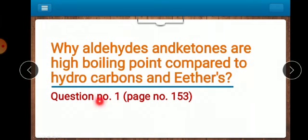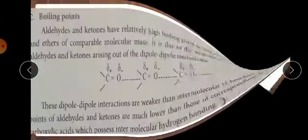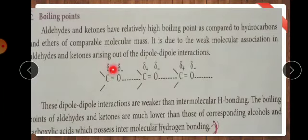This is already in your page number 153. See here 153. It is in physical properties of compounds. Boiling point. Aldehydes and ketones are relatively high boiling point as compared to hydrocarbons and ethers comparable molecules due to weak molecular association of aldehydes and ketones because of dipole-dipole interaction. This answer I want to write.